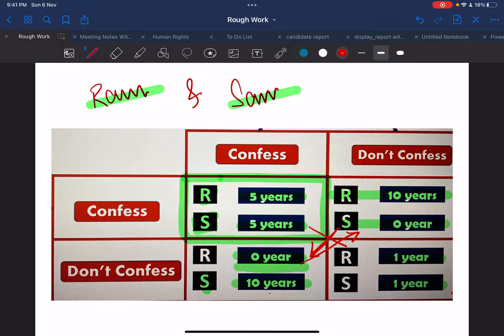The best situation could have been this where both are getting one year each. But to get this one year, both have to be quiet and trust each other, which they do not do. They land up getting five years each. They both confess thinking that this would maximize their benefit.